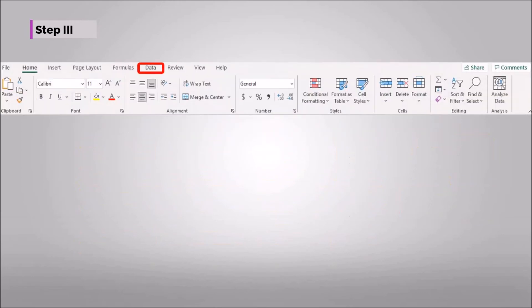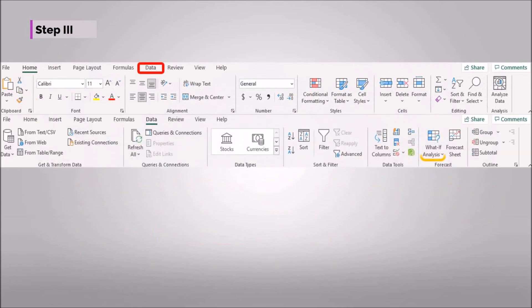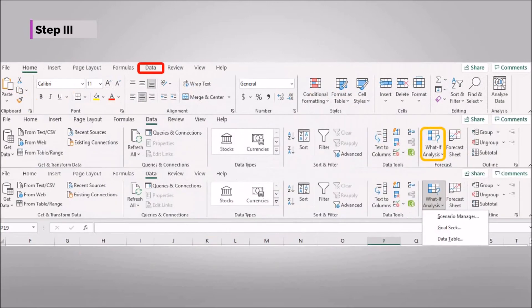In order to do this, you should go to the data ribbon and choose what-if analysis, and following that, three options will be given to choose. Then you will choose Goal Seek.